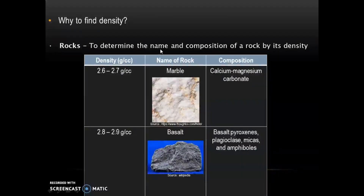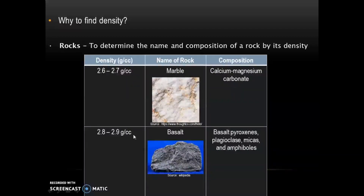Density also helps us to determine the name and composition of a rock. In the first example, the density value ranges from 2.6 to 2.7 gram per cc. Based on this, we can know that it is marble and also its composition can be known. In the second one, density ranges from 2.8 to 2.9, and we can know that it is basalt and its composition can also be known.